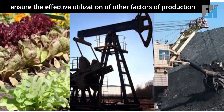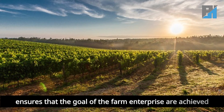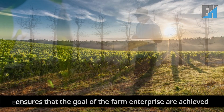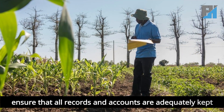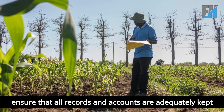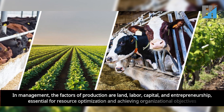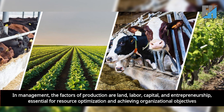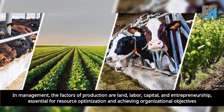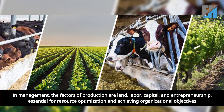It ensures the effective utilization of other factors of production, ensures that the goals of the farm enterprise are achieved, and ensures that all records and accounts are adequately kept. The factors of production are land, labor, capital, and entrepreneurship — essential for resource optimization and achieving organizational objectives.